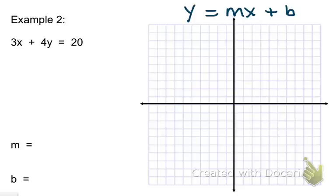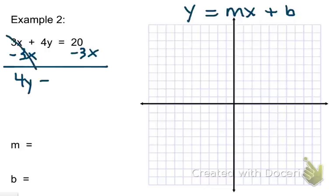Alright, let's go ahead and take a look at example number 2. Our equation is 3x plus 4y equals 20. Remember our goal is to isolate y, get y by itself. The first thing we need to get rid of is the 3x, so we're going to do that by subtracting 3x on both sides. And that will cancel these guys out. That leaves me with 4y is equal to negative 3x plus 20.